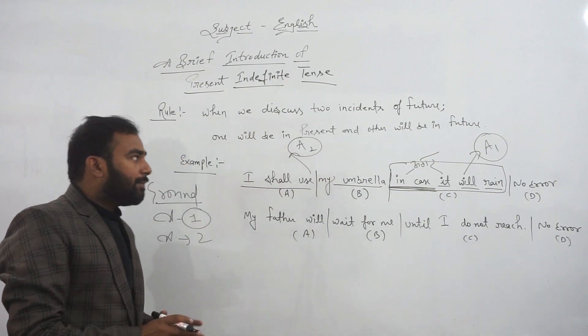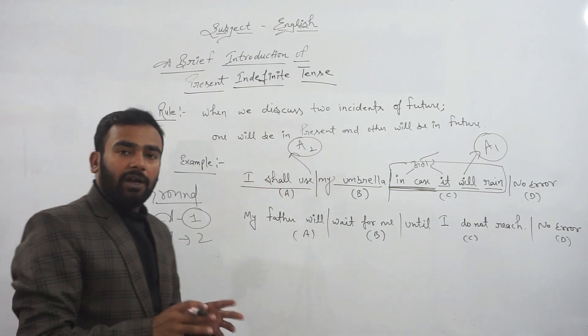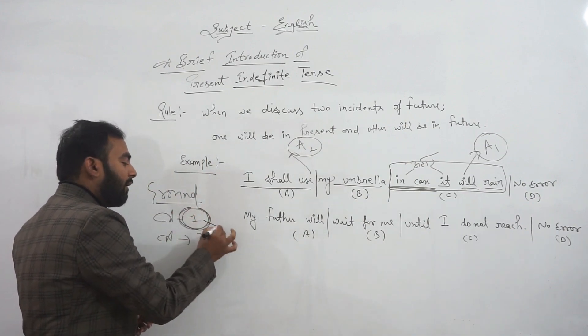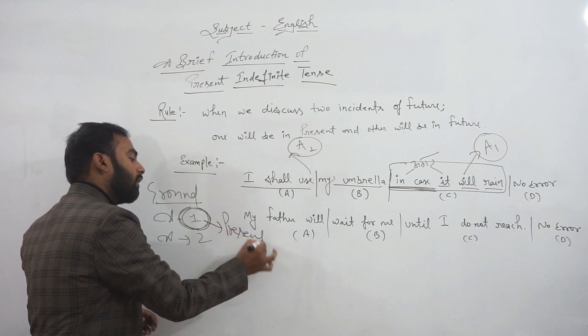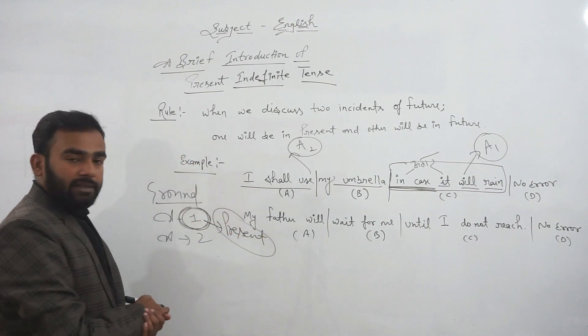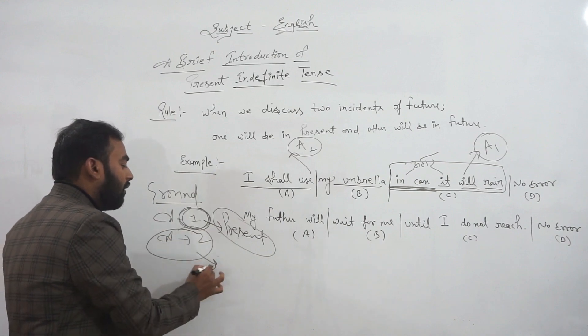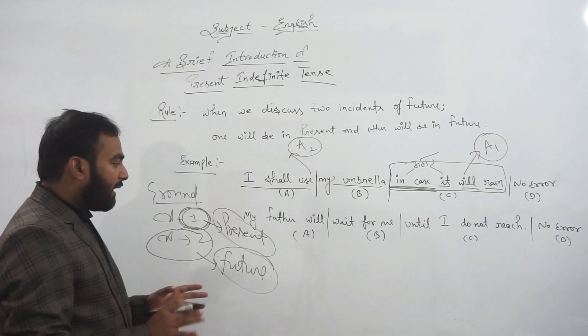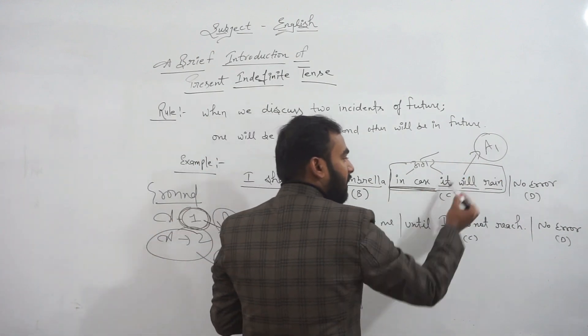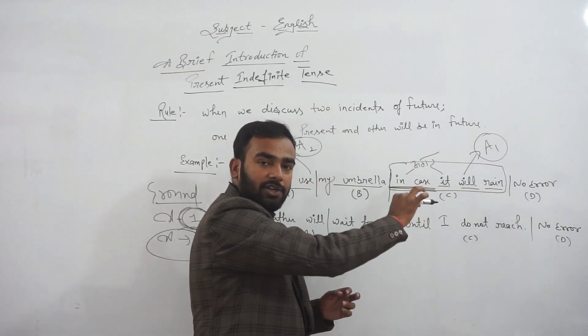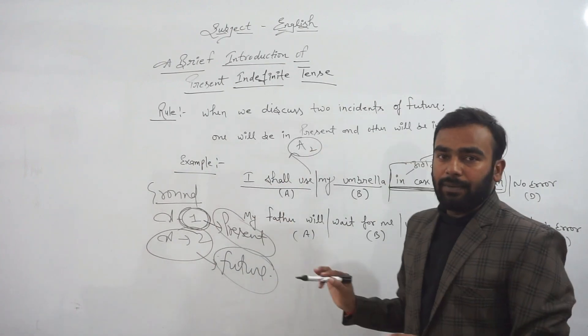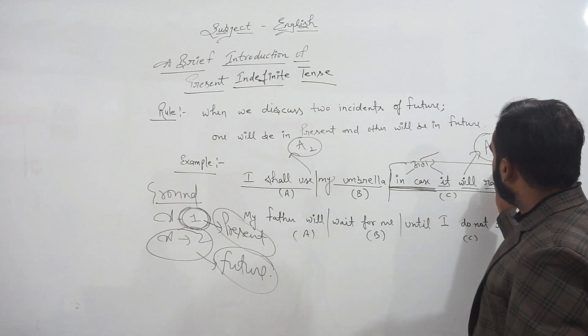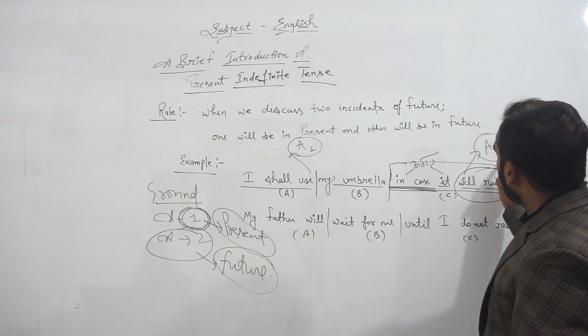The concept says the action one, the very first action happening on the ground, will remain in present, and another action will remain in future. Hope you get it. So the first action here is 'it will rain'. If it rains, only then will he use his umbrella. So this clause we will keep in present, and as soon as we keep it in present, this 'will rain' will automatically be removed and in its place we will write 'rains'.